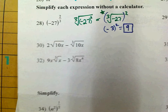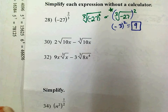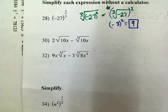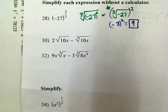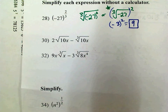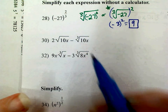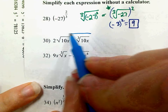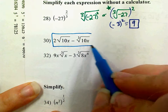On number 30, they both have 10x underneath the radical — the radicands are both 10x — but one is the square root and one is the cubed root, which means I cannot do anything. That is my answer.